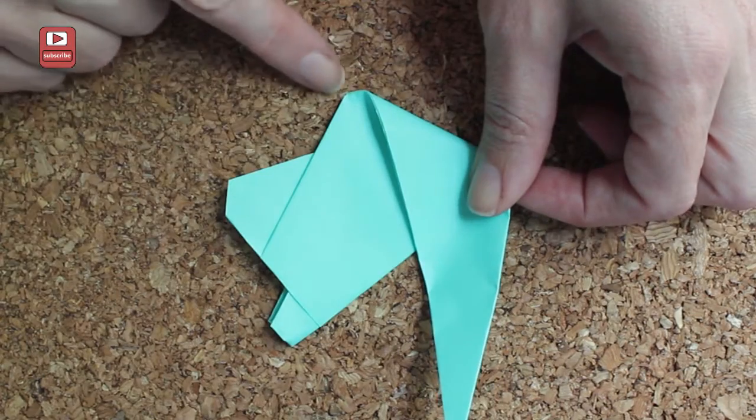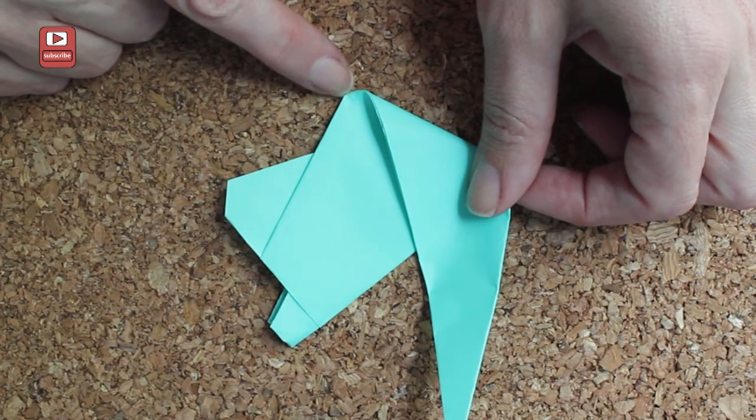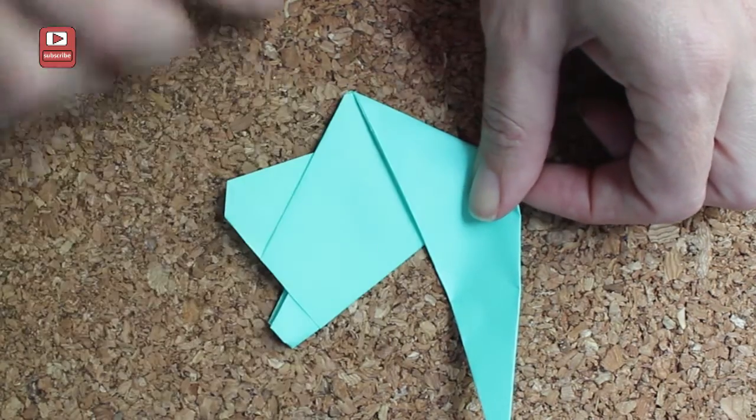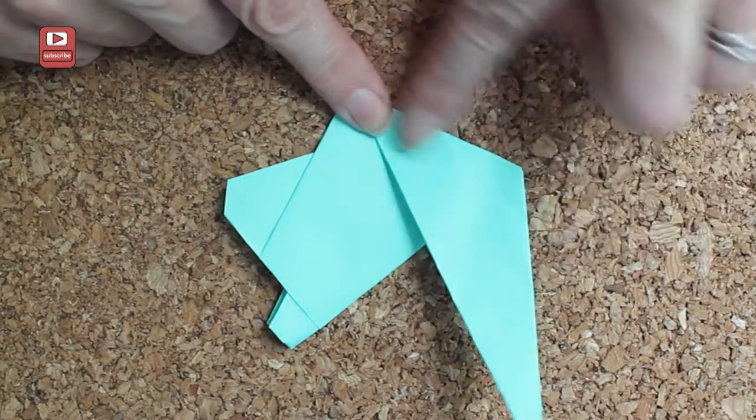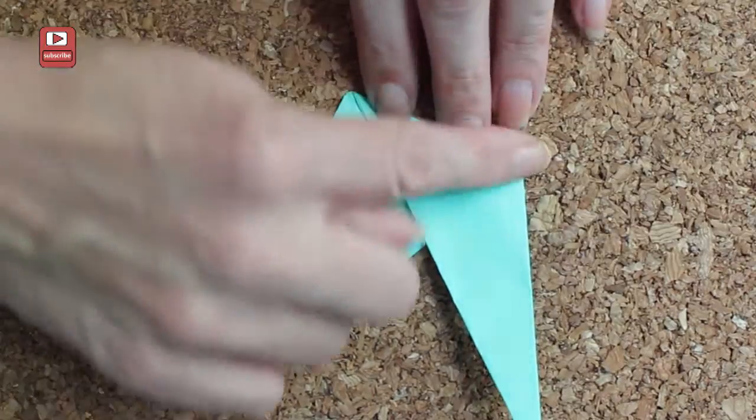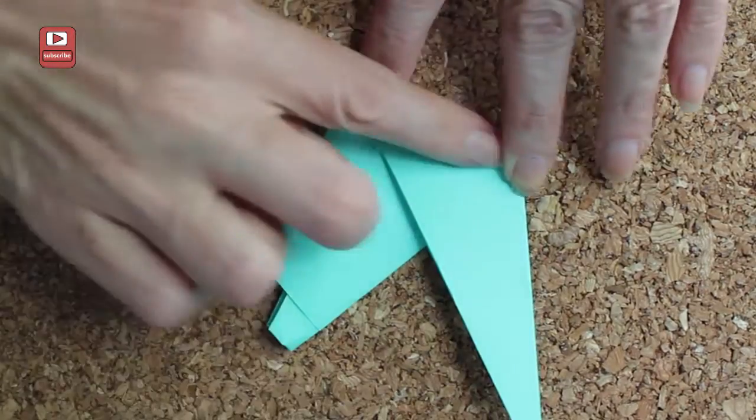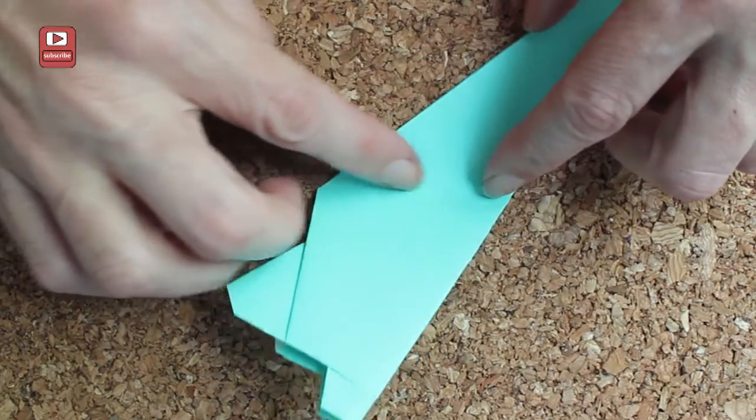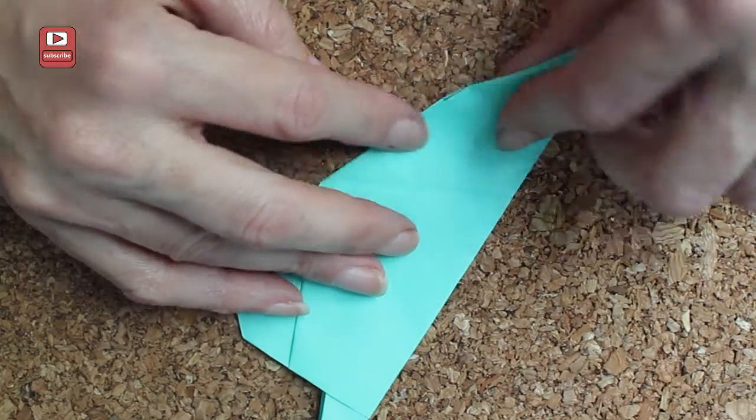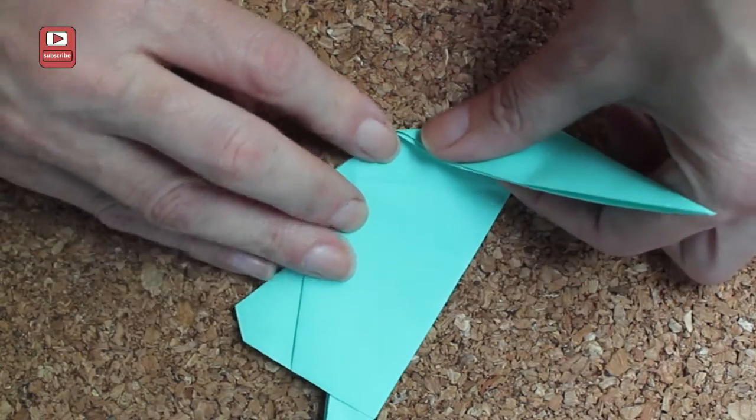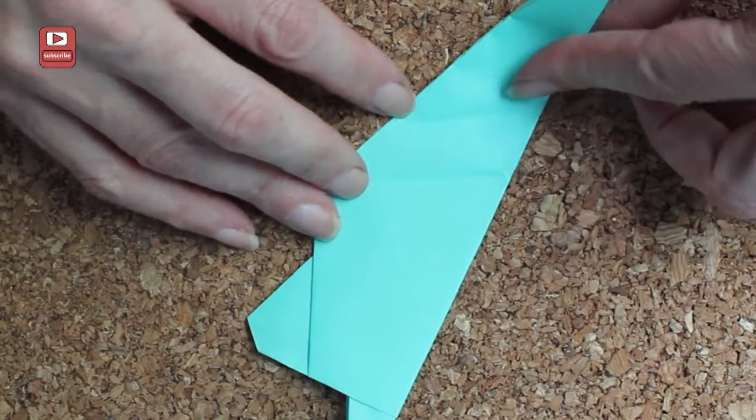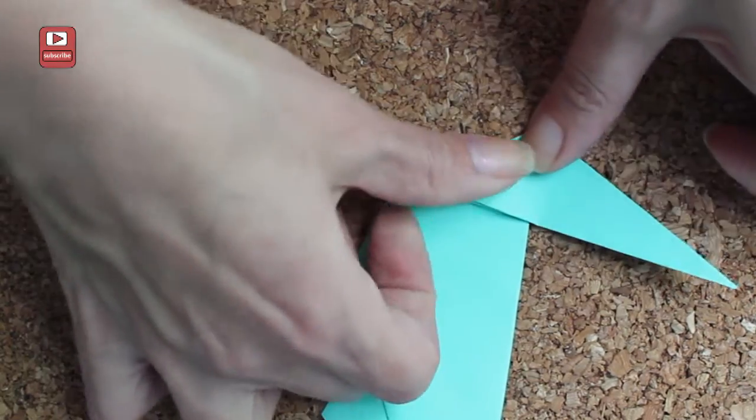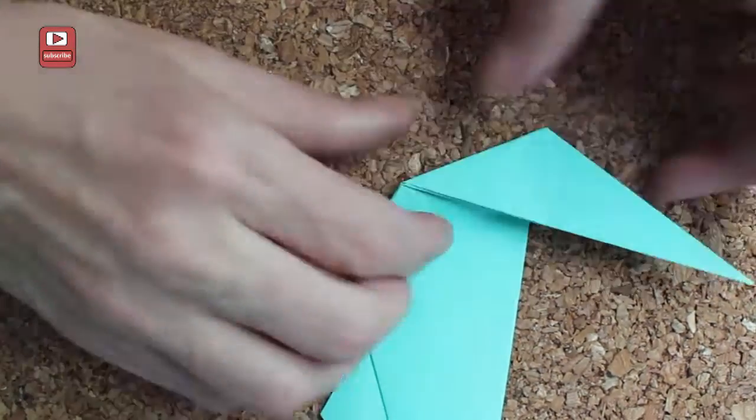And the front foot, which is down here, is where you want one of the points of this triangle to be. So just flatten that out. And then you want to do another one that is parallel to this line. About, again, three quarters of an inch to an inch away.